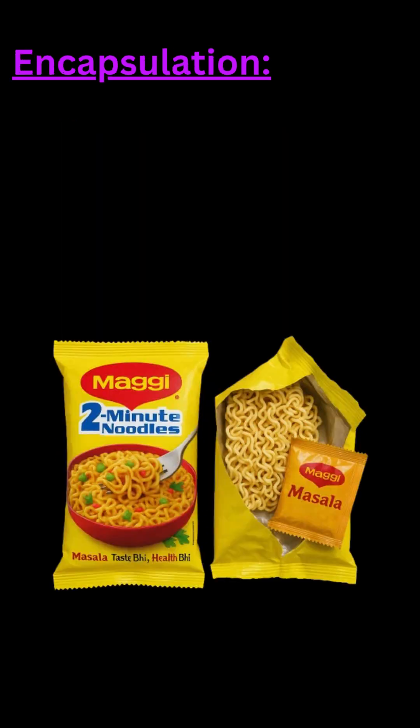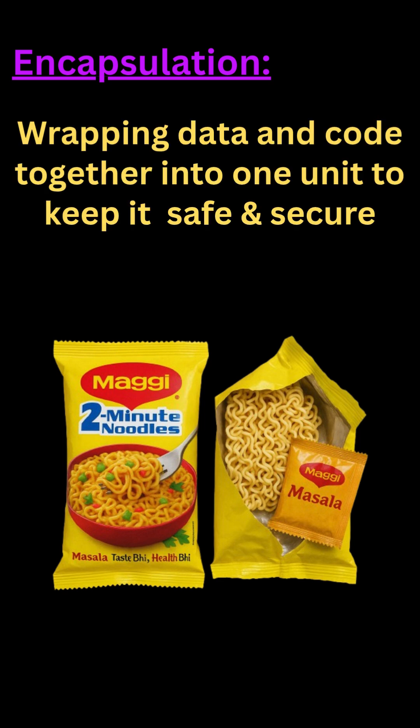Now, what do we have in the Maggi packet? Noodles and masala. We wrap these two things together in one packet. Like that, wrapping data and methods together into one unit to keep it safe and secure is called Encapsulation.